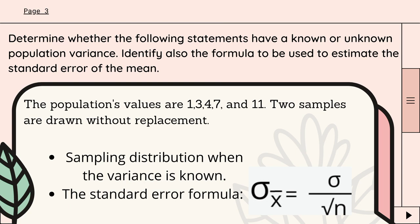Last example: the population's values are 1, 3, 4, 7, and 11. Two samples are drawn without replacement. The sampling distribution when the variance is known. The standard error formula is sigma divided by the square root of n.